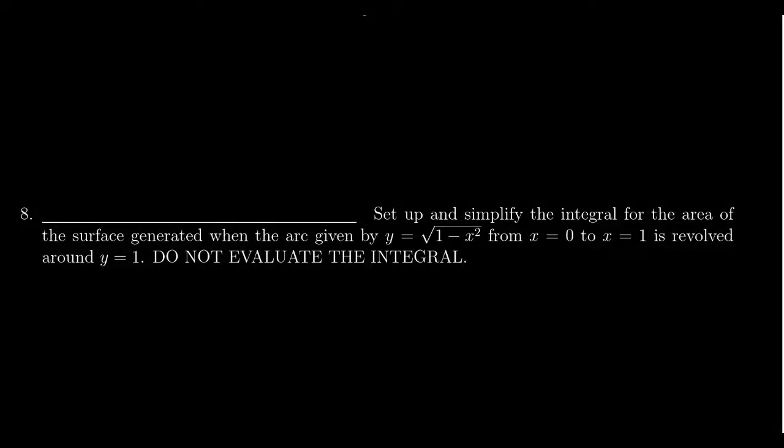In this video, we provide the solution to question number 8 for practice exam number 2 for Math 1220, in which case we're asked to set up and simplify the integral that will compute the surface area generated by the surface formed by revolving the arc, y equals the square root of 1 minus x squared, from x equals 0 to x equals 1, around the axis y equals 1.